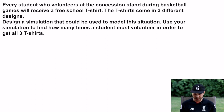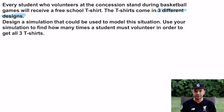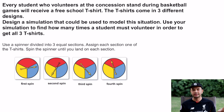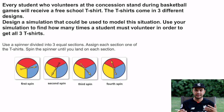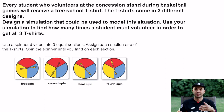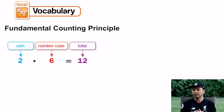Every student who volunteers at the concession stand during basketball games will receive a free school t-shirt. The shirt comes in three different designs. Design a simulation that could be used to model this situation and find how many times a student must volunteer to get all three shirts. The example would be to use a spinner divided into three sections — assign each section one of the t-shirts, spin until you land on each section. You don't need to pick actual shirts; a spinner represents how you randomly get each one.